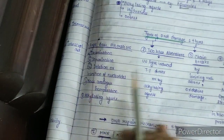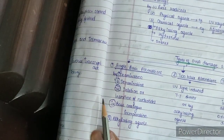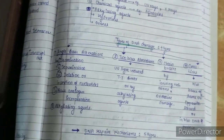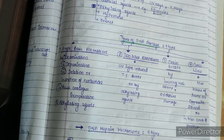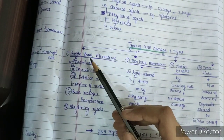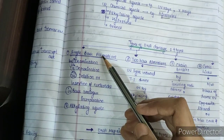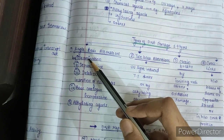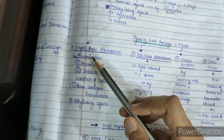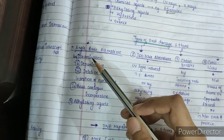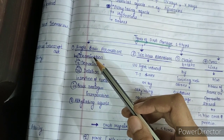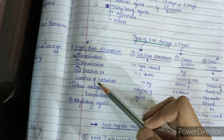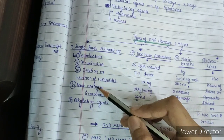DNA damage can be classified into 4 types. The first type is single base alterations, where a base may be altered. For example, a base may undergo deamination — if cytosine deaminates, uracil is formed; if adenine deaminates, hypoxanthine is formed. Single base alterations may also be caused by depurination, deletion or insertion of nucleotides, or base analog incorporation.